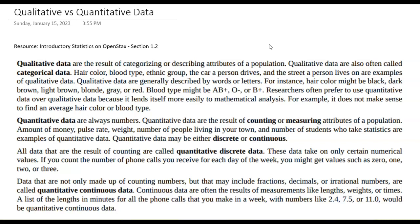Generally, these are going to be words or letters. Researchers often prefer to use quantitative data because it's easier for mathematical analysis. It doesn't make sense to find the average hair color or blood type, but you could find the majority or highest proportion if you're looking at qualitative data.